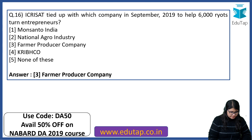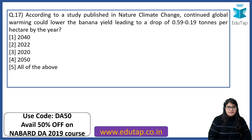Keep mentioning the answers in the comment section — you can write the entire answer very quickly. I am flipping questions fast so we can finish the session quickly for you to revise later. According to a study published in Nature Climate Change, continued global warming could lower banana yield leading to a drop of 0.59 to 0.19 tons per hectare by which year? The right answer is by the year 2050.